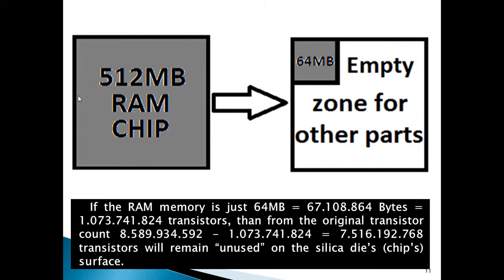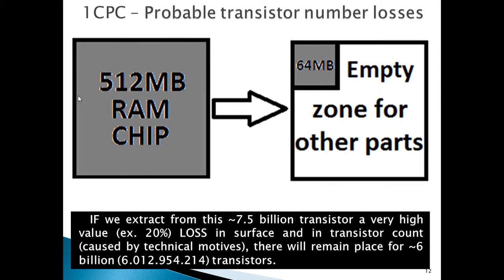If the RAM memory is just 64 MB, that's about 1.1 billion transistors. From the original transistor count of about 8.6 billion minus 1.1 billion, there remain about 7.5 billion transistors unused on the silica chip surface. If we extract a very high value — for example 20% loss in surface and transistor count caused by technical reasoning — there will remain place for about 6 billion transistors, even after that.